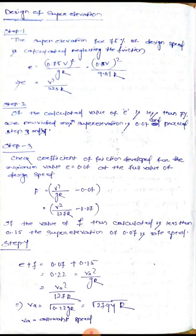Steps 3 and 4: check the coefficient of friction developed for the maximum value e = 0.07 at the full design speed. The coefficient of friction f equals v²/gR minus 0.07, or in km/h: f equals v² by 127R minus 0.07. Since e plus f equals v²/gR, we can isolate f. So f equals v² by 127R minus 0.07, where v is in km/h.